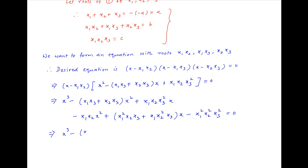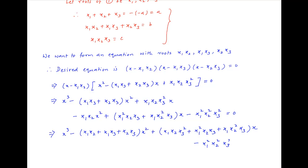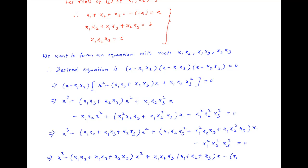This can be written as x³ minus (x1x2 + x1x3 + x2x3) times x² plus (x1x2x3² + x1x2²x3) times x minus x1²x2²x3² = 0, which simplifies to x³ minus (x1x2 + x1x3 + x2x3)x² plus x1x2x3(x1x3 + x2x3)x minus (x1x2x3)² = 0.